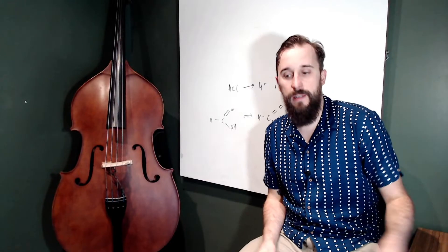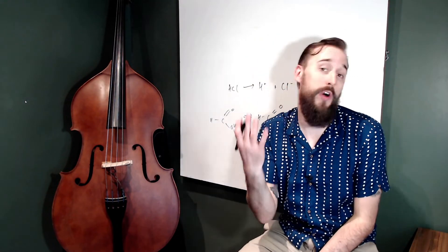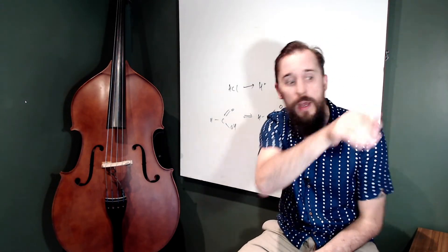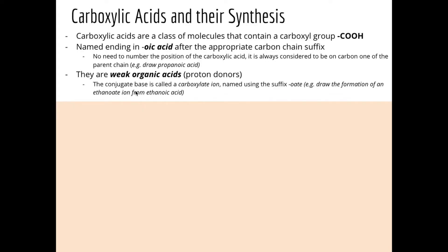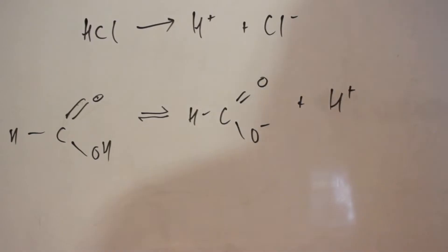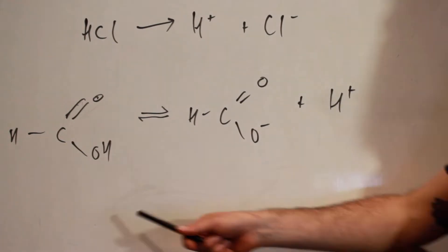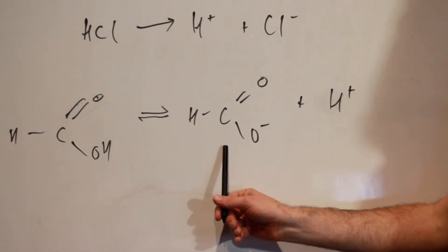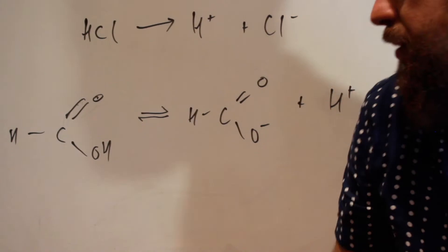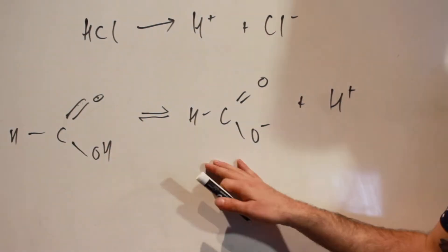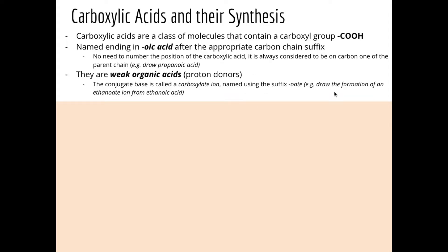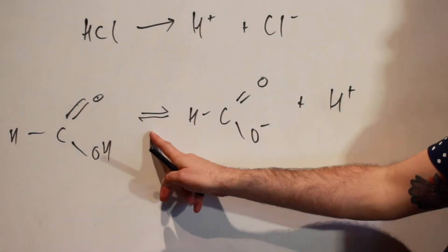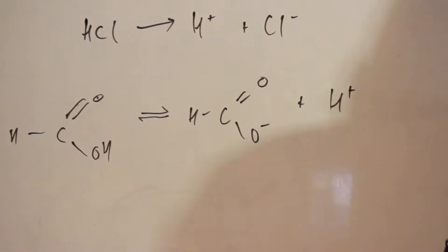They are still acids, and as acids they're going to undergo any sort of reaction that an acid does. This conjugate base that forms has the name a carboxylate ion. So we have the carboxylic acid that has the conjugate base — the carboxylate ion — when it donates the proton. If this was methanoic acid, this would be a methanoate ion. Recall it's in an equilibrium because it's a weak acid, mostly staying in the molecular form.